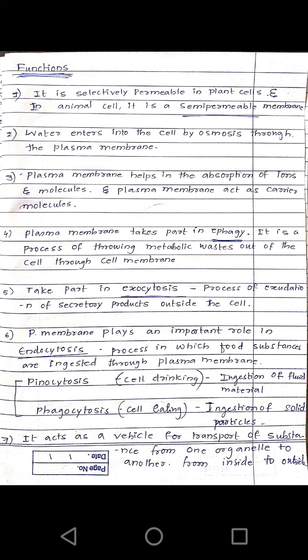If the membrane allows only water and fat-soluble molecules to come inside and go out, then it is called selectively permeable. In plant cells it is selectively permeable, and in animal cells it is a semi-permeable membrane.